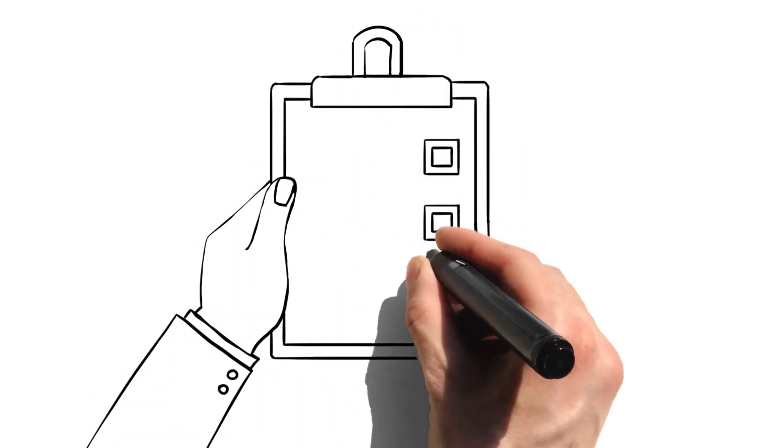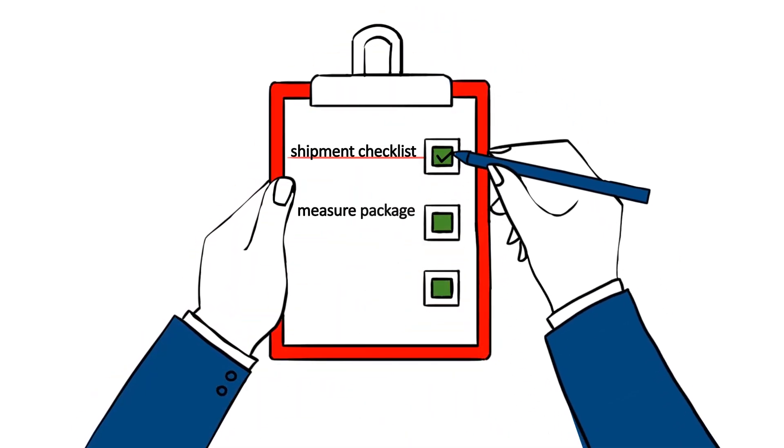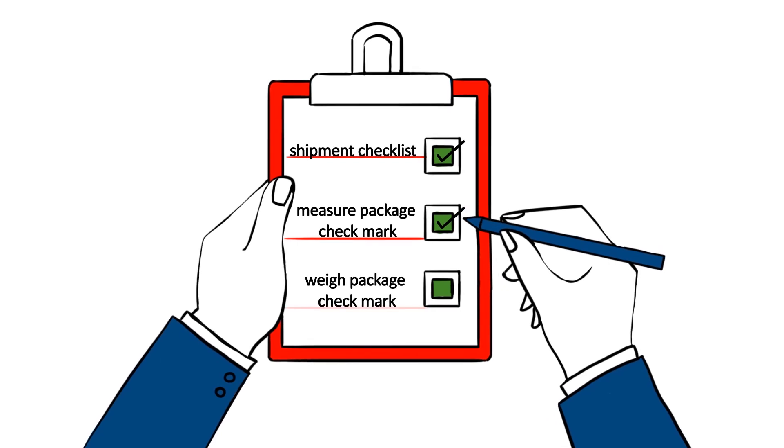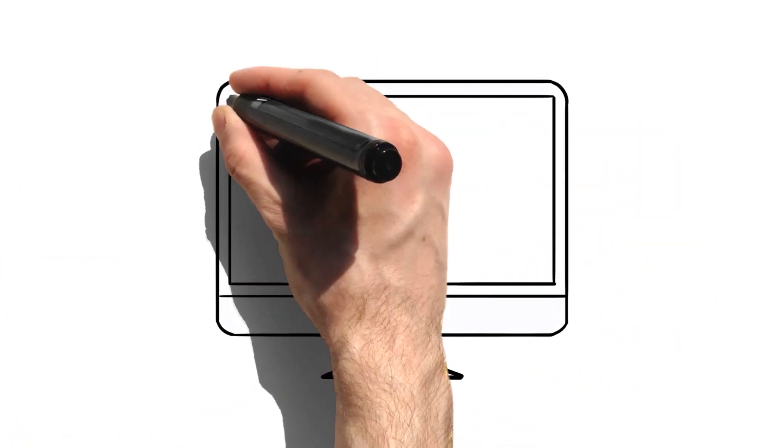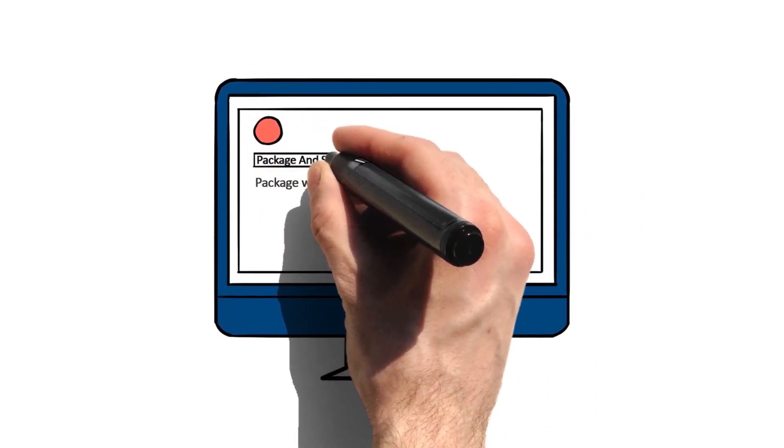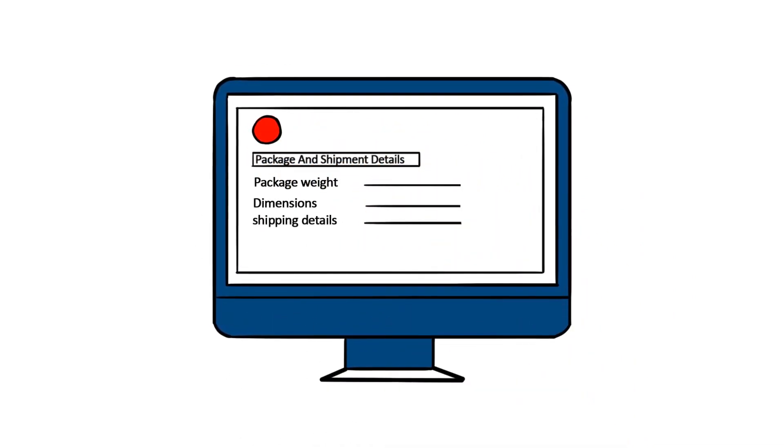Develop a process and establish written rules and procedures for employees to follow when preparing a shipment. Automate any steps, from machines to software, where possible to increase speed.